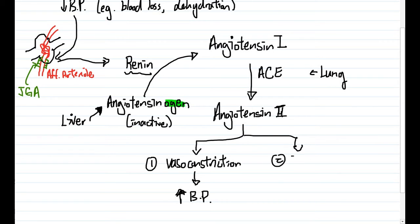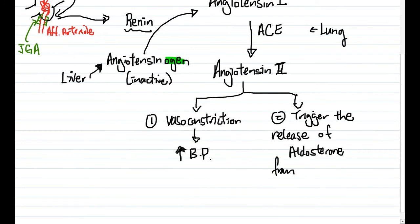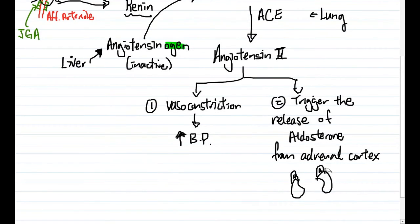The second thing that angiotensin two will do is it's going to trigger the release of a hormone, and the hormone is called aldosterone. Aldosterone comes from the adrenal cortex. Adrenal cortex basically refers to the outer part of the adrenal gland. If this is the kidney, the adrenal gland is just going to be sitting on top of it. So you would have two adrenal glands, one on top of each kidney, and the adrenal gland is separated into the outer portion, which is called the adrenal cortex, and the inner portion, which is called the adrenal medulla. In this particular case, the aldosterone is going to be released from the adrenal cortex.